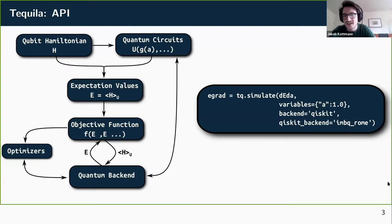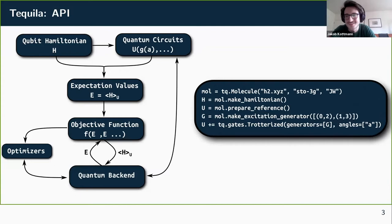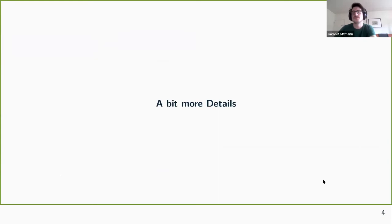Since my background is in quantum chemistry, that's more or less the chemistry hello world — where you initialize a minimal basis H2 and the corresponding unitary coupled cluster style circuit. That's more or less how the code looks at the top level, and those are the abstract structures that are created.